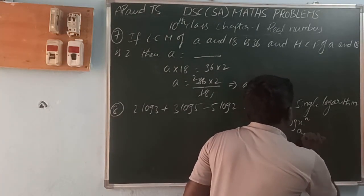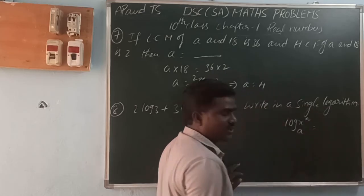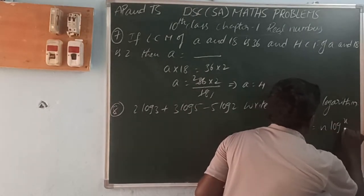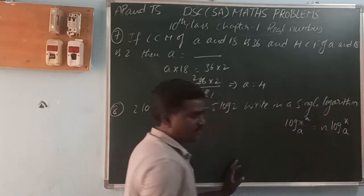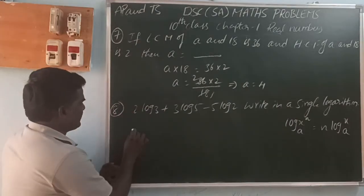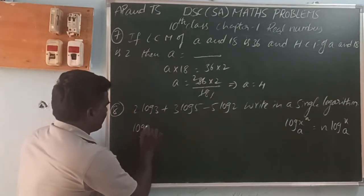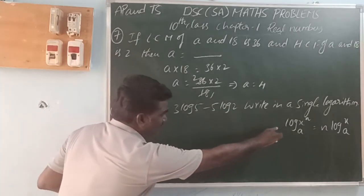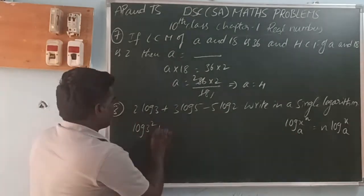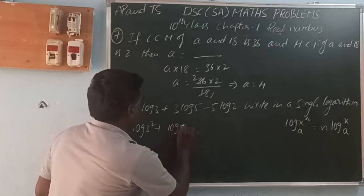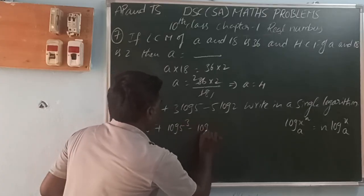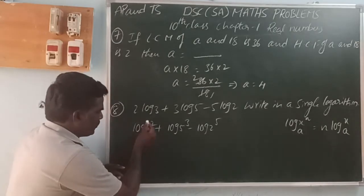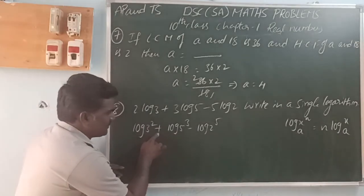The formula for single log: log x power n base a equals n log x base a. For example, log 5 cubed and log 2 power 5 can be expanded using this formula.